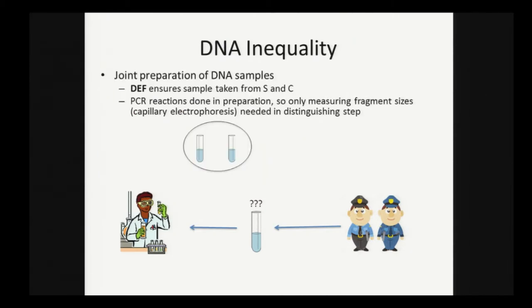The second thing we'll have to have is a joint preparation of the DNA samples, so that the defender can ensure that one is taken from S and one is taken from C. We want to limit the technology that the defender can use to distinguish between the samples. We run all the PCR reactions in the preparation, and during the actual protocol the defender will only be able to measure the size of the fragments. In principle it's not a problem to have a joint preparation because it's only the measurement that reveals information.